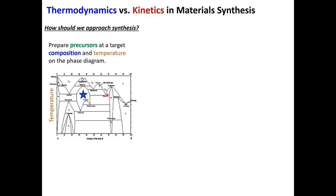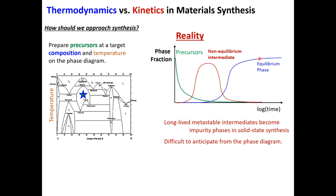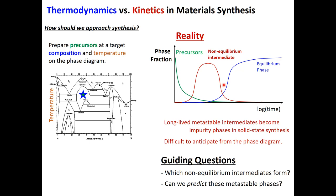If I were going to synthesize a new material, a good starting point is the thermodynamic phase diagram. We prepare precursors at the target composition and carry the reaction out at a temperature where the desired material is stable. The expectation is that precursors go down in phase fraction over time while the equilibrium phase grows. But in reality, before the equilibrium phase forms, we often get non-equilibrium intermediate phases that persist as impurity phases. These metastable phases are very difficult to anticipate from the equilibrium phase diagram.